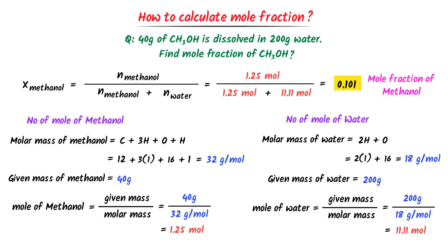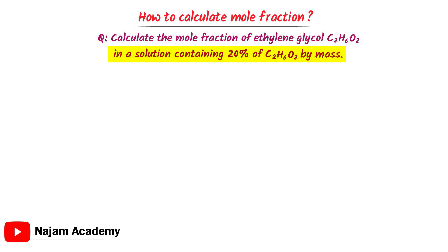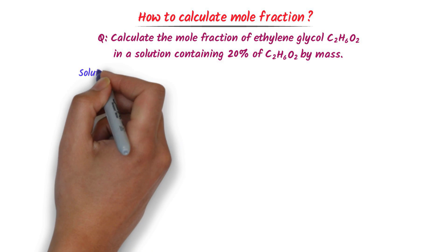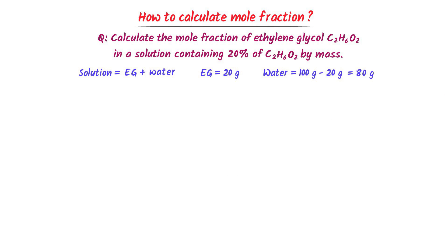Lastly, let me teach you one more difficult problem. Calculate the mole fraction of ethylene glycol in a solution containing 20% of ethylene glycol by mass. This solution contains ethylene glycol plus water. 20% by mass means the solution contains 20 grams of ethylene glycol. The mass of water is 100 minus 20 equals 80 grams. So this solution contains 20 grams ethylene glycol and 80 grams water.